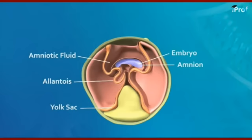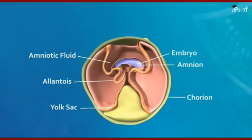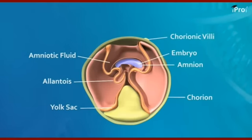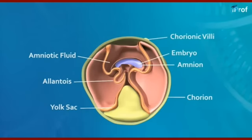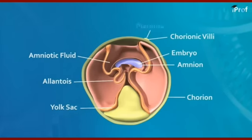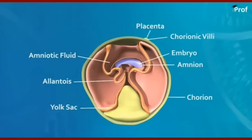The outermost layer of the embryo is the chorion, where finger-like projections called chorionic villi are present. The chorionic villi are embedded into the endometrium of the uterus, thus forming the placenta — which is the mechanical and physiological connection between the fetus and the mother.